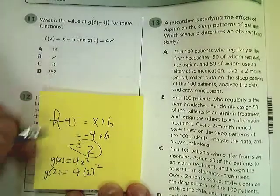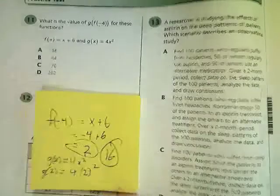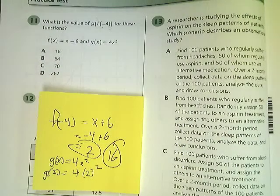2 squared is 4 times 4 is 16. So the answer to number 11 is just A.